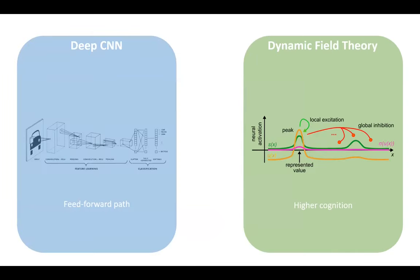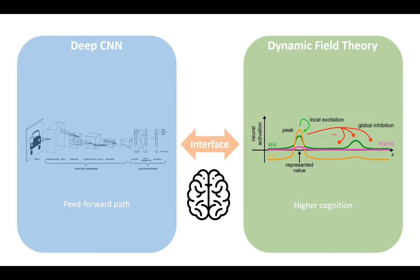On the one hand, we have deep neural networks that are able to extract the complex features needed for object recognition — quite similar to what the ventral stream of human vision does. On the other hand, we have Dynamic Field Theory, which delivers the neural processes needed for higher cognition, such as autonomous process organization, sequence generation, feature binding, and working memory, among others. An interface between them would combine the theoretical strengths of both frameworks, allowing for complex cognitive operations on natural visual input.